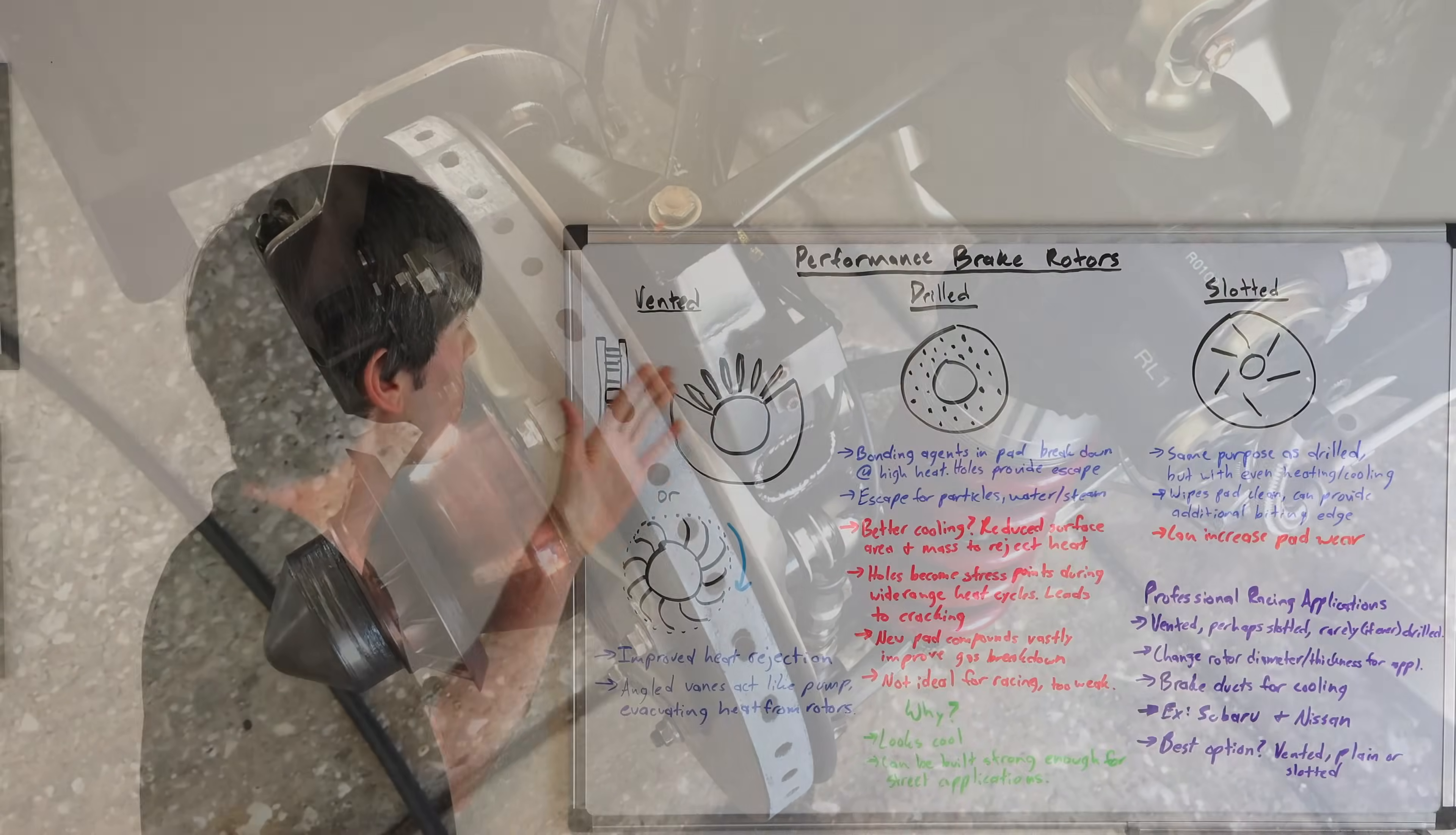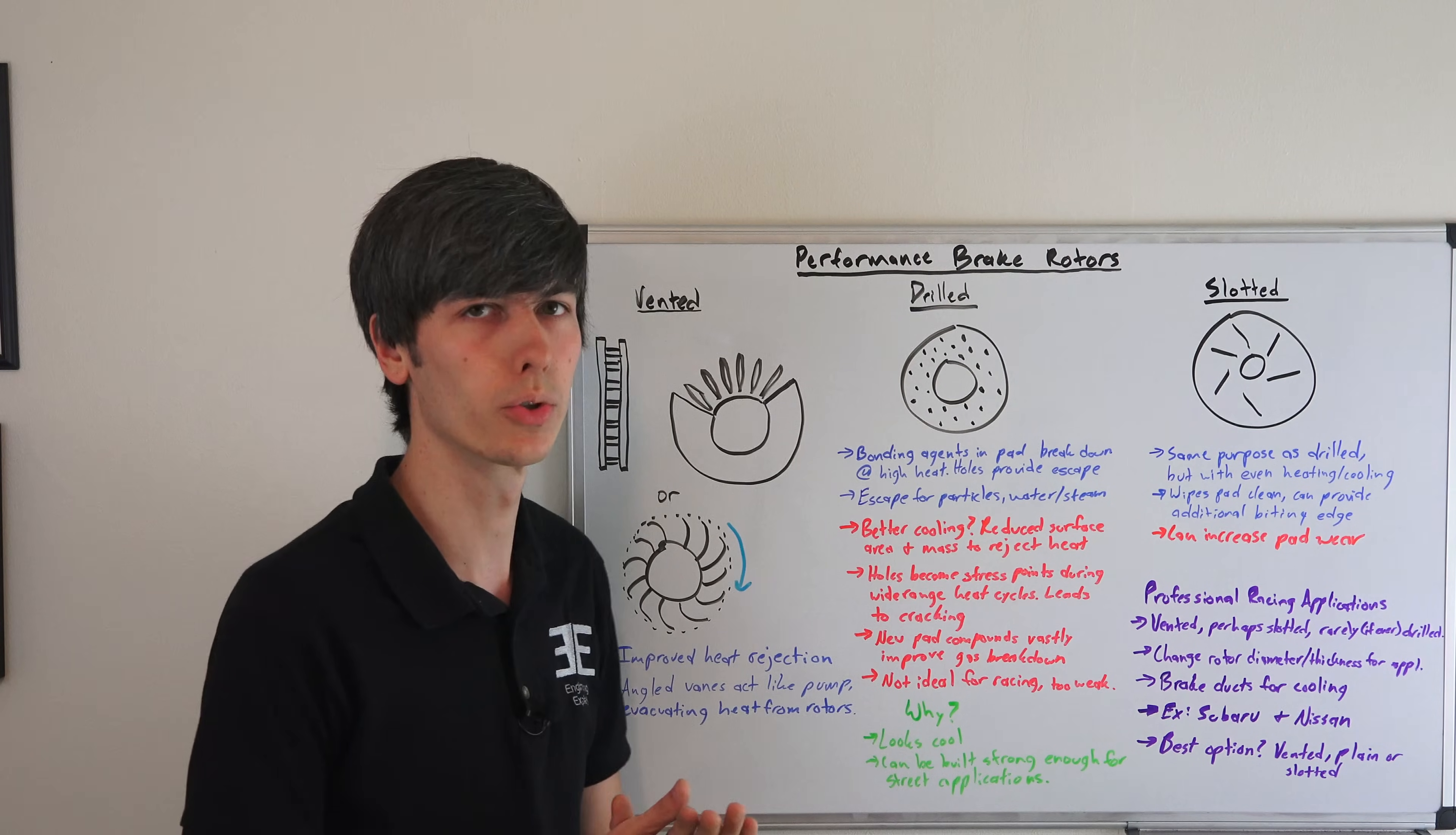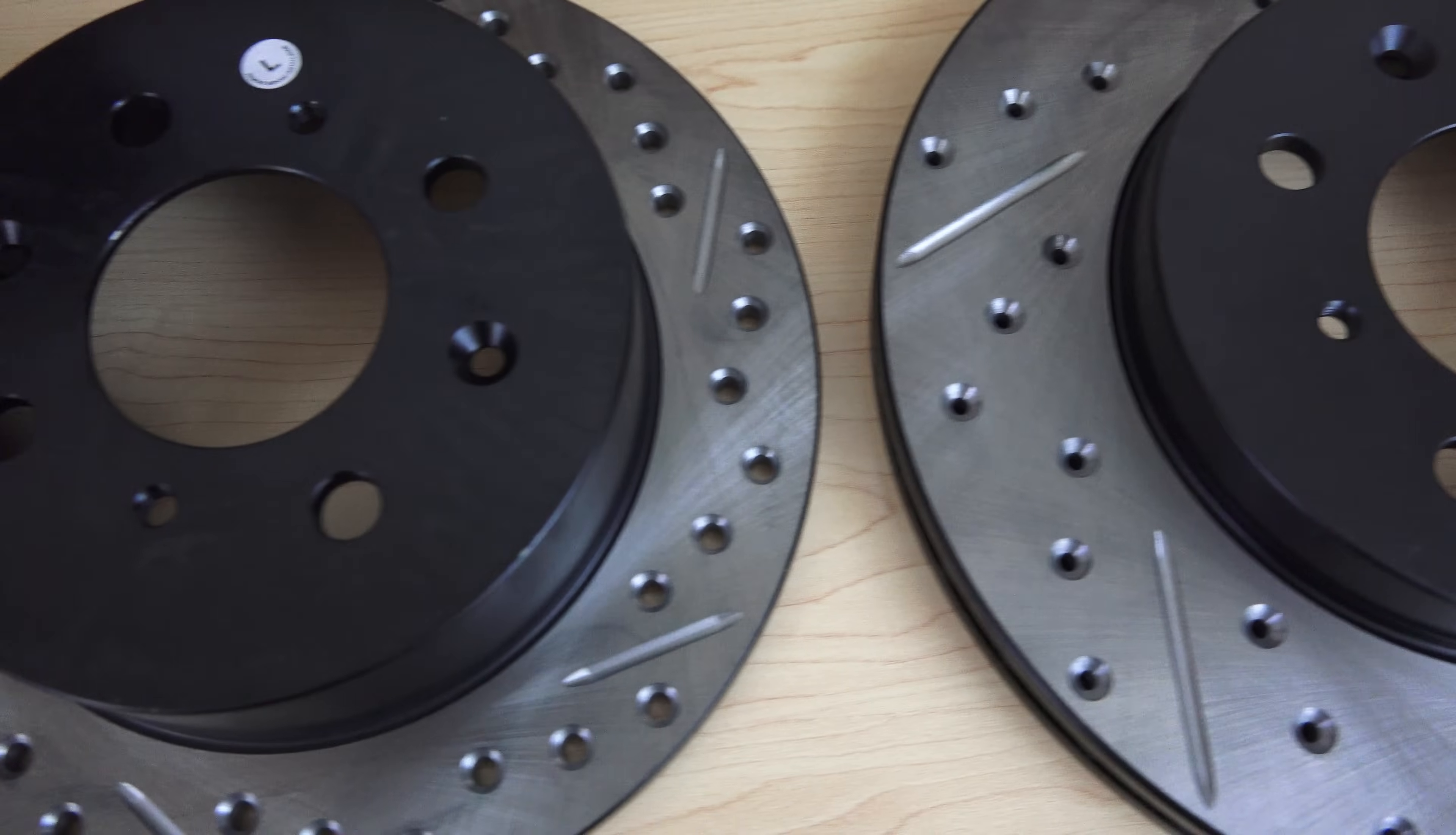And so what is the best option? Well, pretty much vented is a good bet to go with, and then either plain on the exterior or slotted. You can probably stay away from drilled unless you just think it looks really cool and you don't really care about the fact that it's going to probably fail before these other two options.